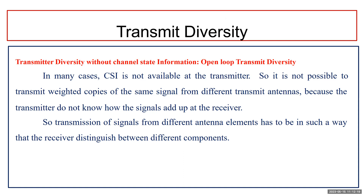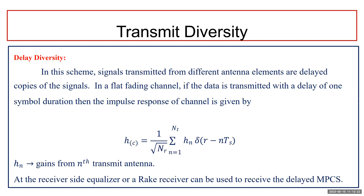Transmission of signals from different antenna elements has to be done in such a way that the receiver can distinguish between different components. For that, there are two techniques. The first one is delay diversity, where signals transmitted from different antenna elements are delayed copies of the same signal. This ensures that the effective impulse response is dispersive even if the channel itself is flat fading. In a flat fading channel, data is transmitted with a delay of one symbol duration.